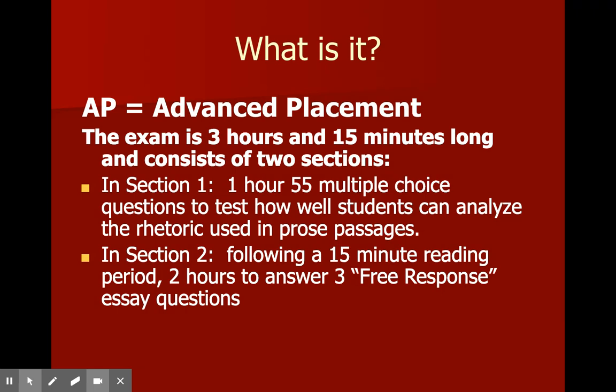There are two different sections. The first thing that you do is go into wherever the testing place is, usually the East Campus Theater or West Campus Auditorium. You sit down and for one hour take a 55 multiple choice question test. It's a reading test where you're given different passages — prose passages, nonfiction — and you're asked to answer questions analyzing the rhetoric in those passages. Multiple choice.